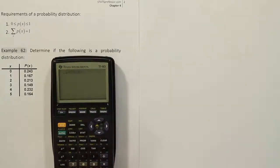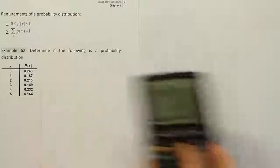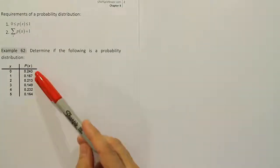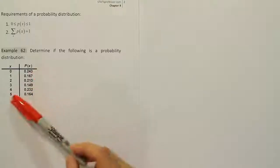So 0.243 plus 0.167 plus 0.213 plus 0.149 plus 0.232 plus 0.164. And when you're finished, you see that it's 116.8%. So it's too high. And that means that this is not a probability distribution. Somehow or another, they've messed up on one of these probability calculations or the numbers here are just not accurate altogether.